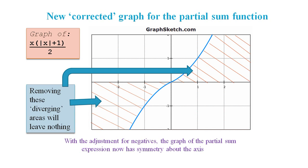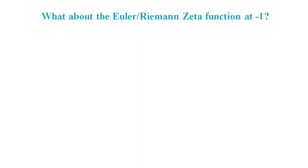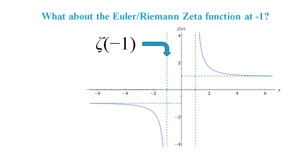And what about the Euler/Riemann Zeta function at -1? Well, if we follow the same logic to adjust for negative numbers as we did earlier, we get symmetry about the axes, and the function would not be defined at -1.